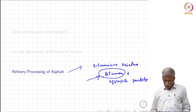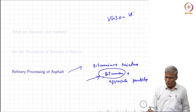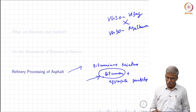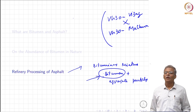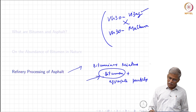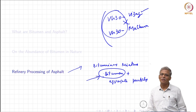To give you an example: if you are familiar with the VG kind of specification, a VG-30 from Barauni refinery is not the same as VG-30 from Mathura refinery. They are not one and the same. The processing methods will be different, the raw material used may be different, and while you will be meeting the spec, the actual rheological response of the material will not necessarily be the same.